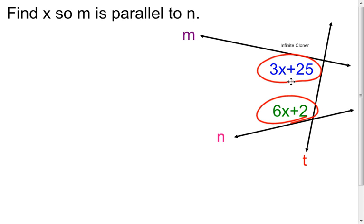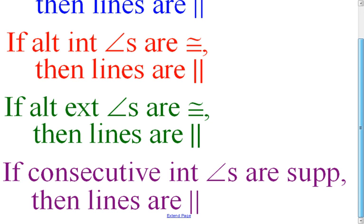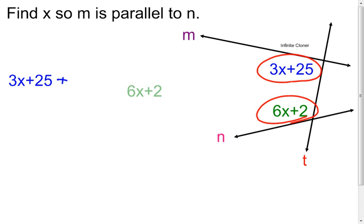What needs to happen with those two angles for the lines to be parallel? They need to be supplementary, because the theorem says: if consecutive interior angles are supplementary, then the lines are parallel. So let's make those two angles supplementary — we'll add them together and set the sum equal to 180 degrees.